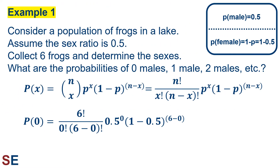Let's look at our first example and consider a population of frogs in a lake. We'll assume a sex ratio of 0.5 and define the success for a trial — in which we assess the sex of a chosen frog — as that frog being a male. The success probability for any individual trial is therefore 0.5, and the probability of failure is 1 minus 0.5, which is 0.5. The question we will address is this: what are the probabilities of collecting 6 frogs, determining their sexes, and getting a result with 0, 1, 2 males, etc.?